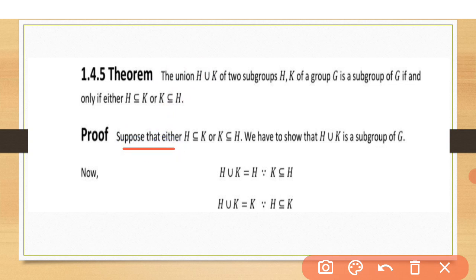Since the condition is if and only if, we have to prove in two ways. First, we suppose that H is contained in K or K is contained in H, and we prove that H∪K is a subgroup. Then we suppose that H∪K is a subgroup and prove that H is contained in K or K is contained in H.